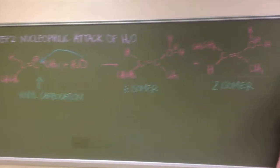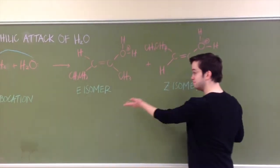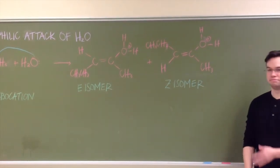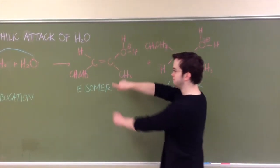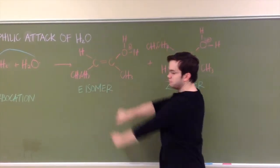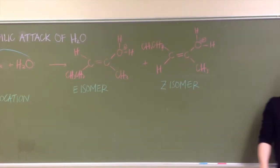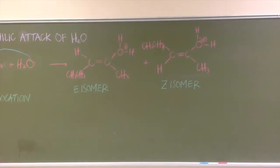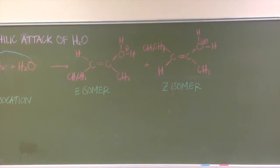This yields two constitutional isomers, denoted E and Z. The E isomer has the two largest substituents in a trans configuration, thereby making it more stable and a major product of this step. This E isomer will be carried on to the next step.